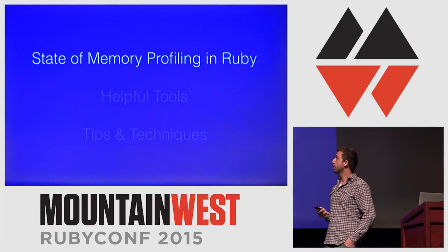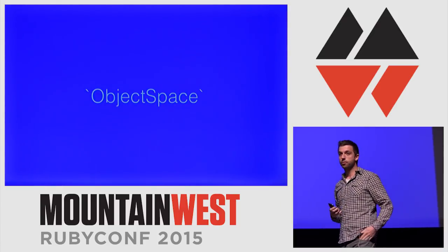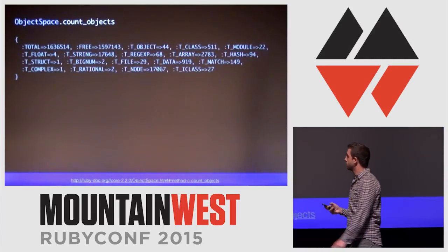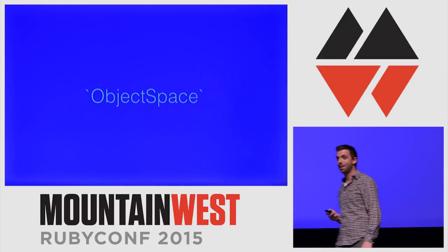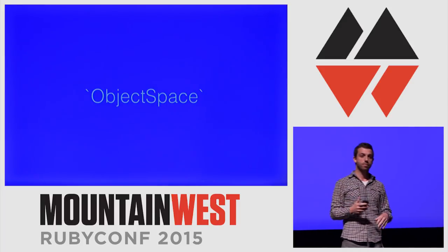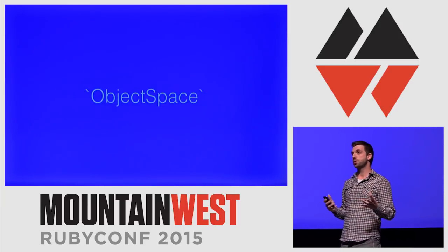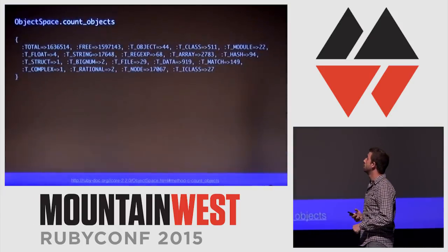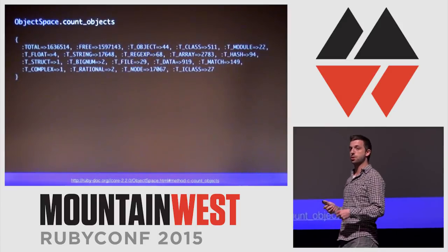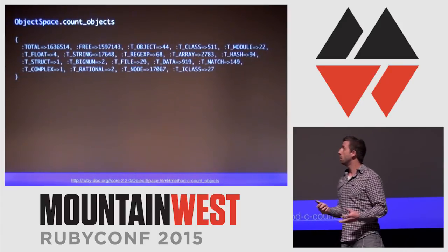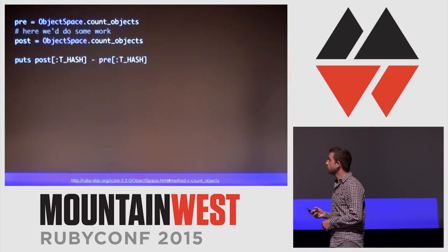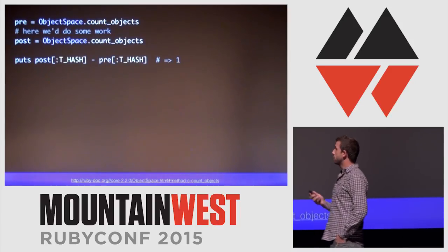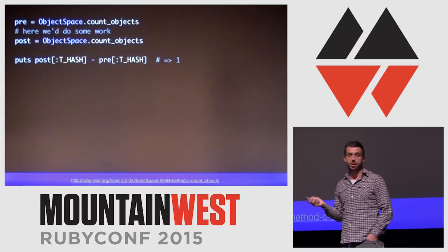Let's start on the state of memory profiling in Ruby. Who's familiar with ObjectSpace? ObjectSpace is a built-in Ruby API in MRI that gives you introspection into all the objects and object counts currently live inside the Ruby VM. It gives you APIs like ObjectSpace.count_objects, which returns a hash with a count of all different types of objects that currently exist. If we call count_objects before and after doing nothing, we'd expect the difference to be zero, but it actually ends up being one.